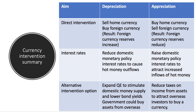Quantitative easing is also an alternative intervention option. To cause a currency to depreciate, the central bank might expand QE to stimulate the domestic money supply and bring down bond yields — buying more bonds raises bond prices and lowers yields, which may cause an outflow of hot money. Conversely, to cause appreciation, the government could reduce taxes on income from overseas assets, such as interest paid to overseas savers, attracting foreign investors to buy the currency.